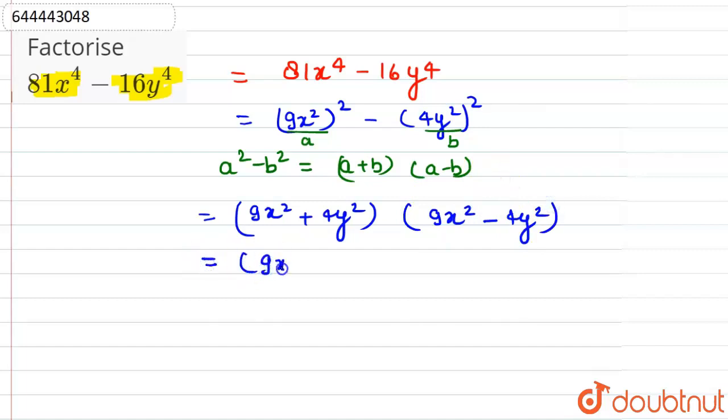In the next step we will write this as it is. Here we can write 9x square as 3x square, minus 4y square as 2y square. Now 9x square plus 4y square as it is. Here it is again in the form of a square minus b square.